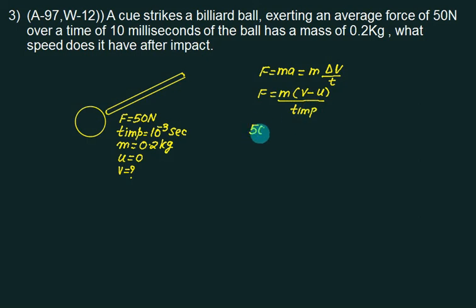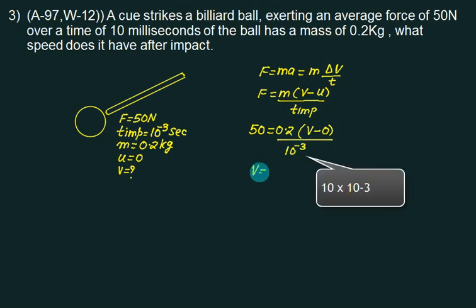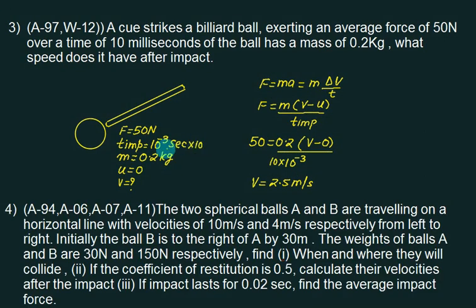Our force is 50, mass is 0.2, final velocity we don't know, initially 0 divided by 10 to the power minus 3 seconds. So we can very well find out the velocity of the ball, which comes out to be 2.5 meters per second.